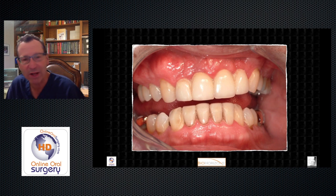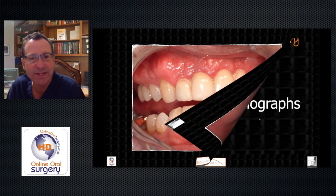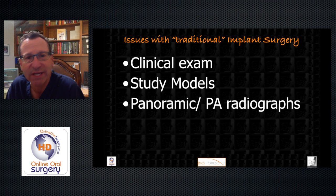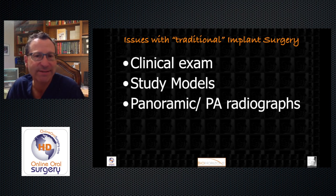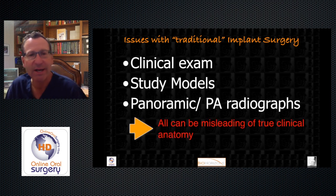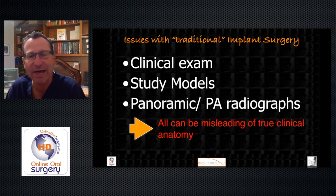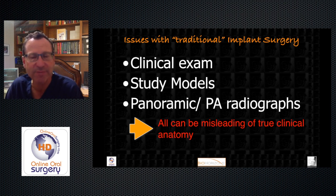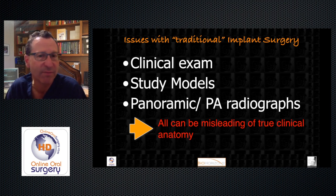It's not that we can't place implants well by traditional techniques. It's just that over the years I've learned there are some issues with the way we traditionally do implant surgery. The clinical exam, study models, panoramic radiographs, and periapicals can all be misleading of the patient's true clinical anatomy. How many times have you had a surgical guide and the implant positioning set through the center of the occlusal table of the pontic in the wax-up, and when you flap it open you realize you can't place the implant in that position?